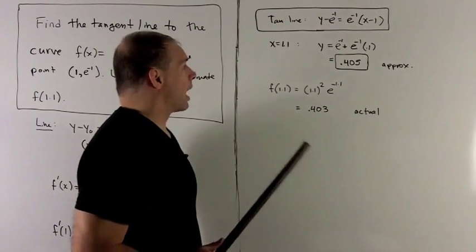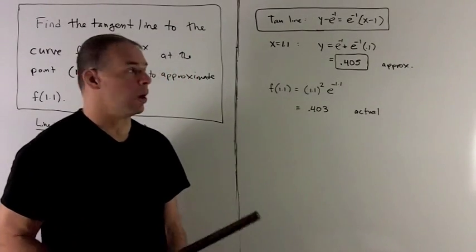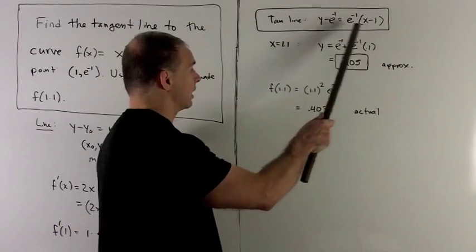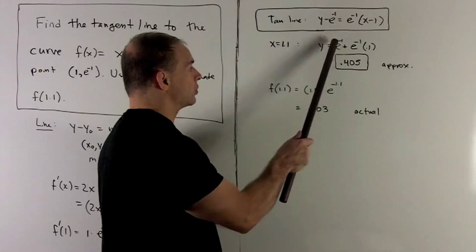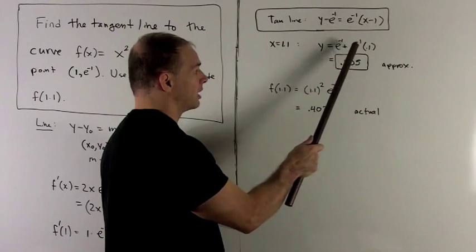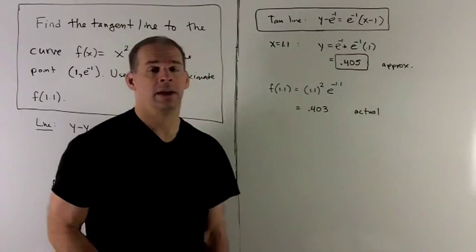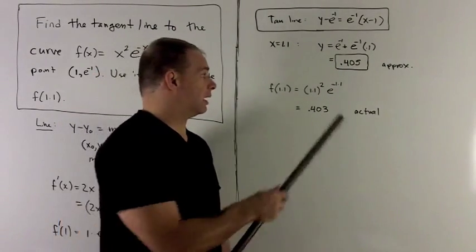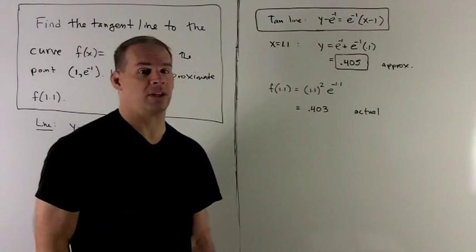Now, if I want to approximate the point at 1.1, we're going to just stick that in here. The e^(-1) gets pushed to the other side, so I'm looking at e^(-1) + e^(-1) × 0.1. Putting that into a calculator gives me 0.405, and that's my approximation.